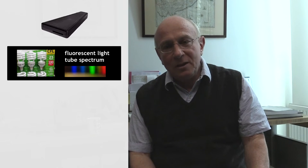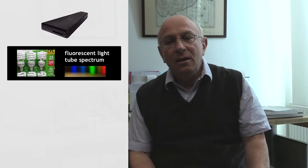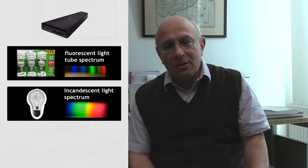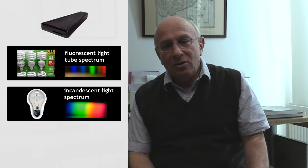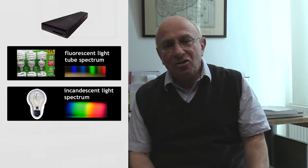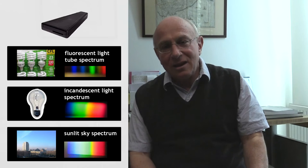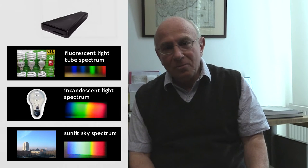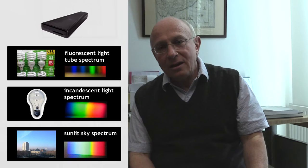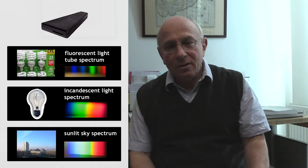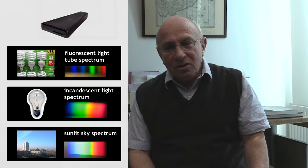You can only see the separate wavelengths when you split the light with the aid of such a spectroscope. If you aim it at an incandescent lamp, you get a different, more fluent spectrum — all wavelengths ranging from blue to red. And if you aim it at the sky, you get a similar kind of spectrum, more similar to sunlight than modern LEDs.